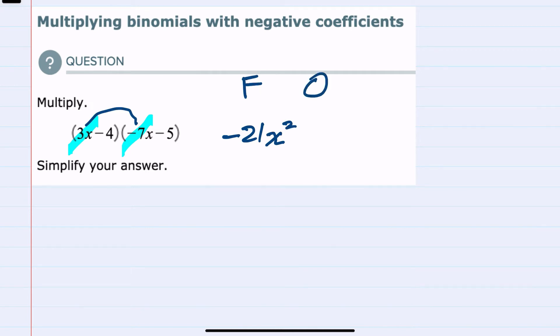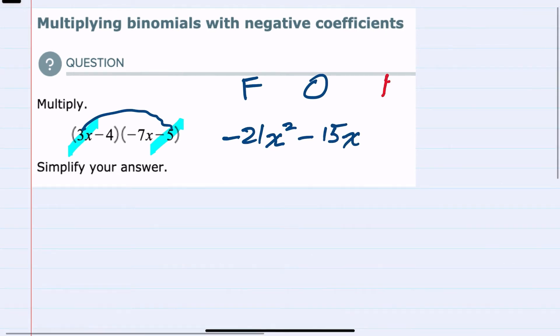We would then move to the outer terms, so this time multiplying the 3x by the minus 5. The 3 times minus 5 is minus 15, and we still have the x. Moving to the inner terms, we have minus 4 times minus 7x.